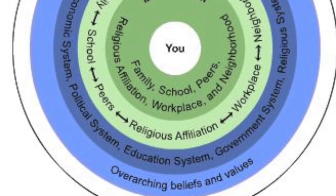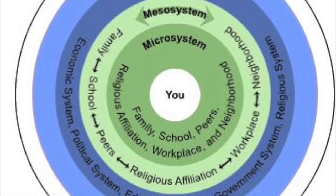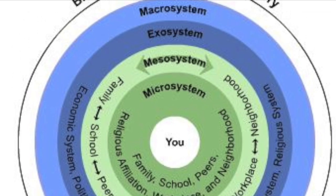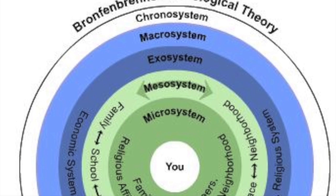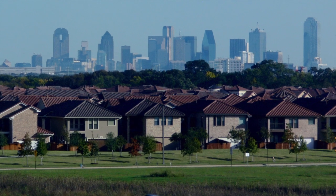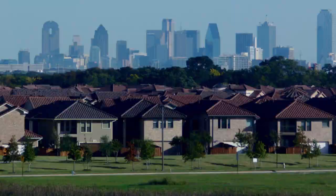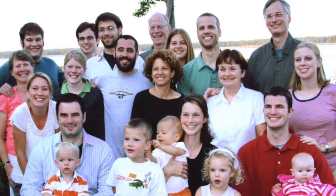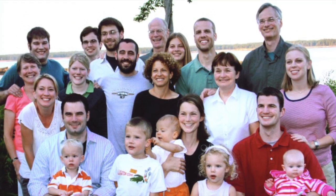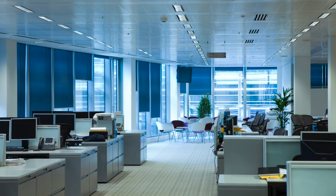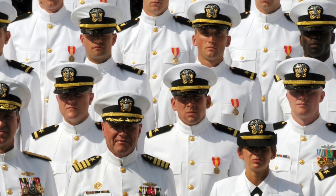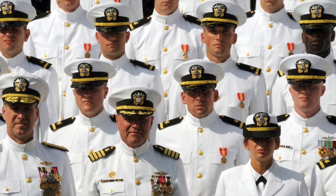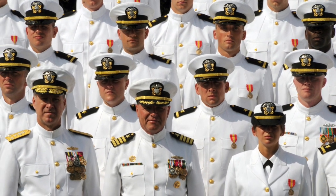The next stage in Bronfenbrenner's ecological model is the exosystem. This stage encompasses parts of a child's life that they may not interact with but which still affect them. A child's neighborhood and city affect how they are raised and who they know. A child's extended family has a big impact upon them even though they may not see each other very often — they can still impact the family's culture and habits. The child's parent's workplace has an effect on a child as well; if the parent gets a promotion or is laid off, it will impact the family's financial situation. Another example would be if the child's parents are in the military — they might move often or a parent may be deployed overseas.